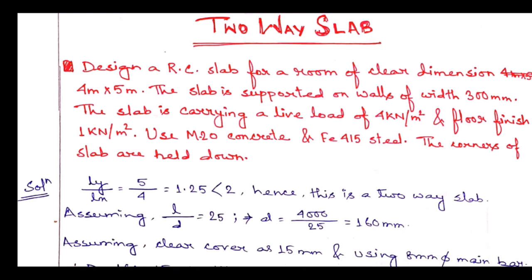Ly/Lx = 5 m / 4 m = 1.25, which is less than 2. This confirms it is a two-way slab and must be designed as such. Ly is the longer span (5 m) and Lx is the shorter span (4 m).